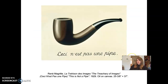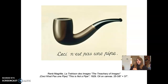René Magritte's "The Treachery of Images" is oil on canvas from 1929. What is the subject of this painting? Well, it's pretty straightforward — it's a pipe. This piece was painted by Belgian painter René Magritte, and it's a commentary on the relationship between art and reality. The subject of the painting appears to be a pipe, but written underneath the pipe in French are the words, 'This is not a pipe.'